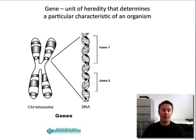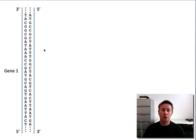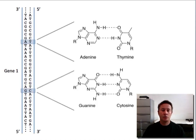Now if we zoom in a little bit and look at one of these genes — let's say gene one — here again you have the two backbones shown in blue, those are the sugar phosphate backbones of the DNA molecule, and then the A's, T's, G's, and C's in here are the nucleotides. They're carbon nitrogen ring-shaped molecules and they're oriented toward the middle of the double helix. I want to zoom in on a couple of these and show you what those look like in a little more detail.